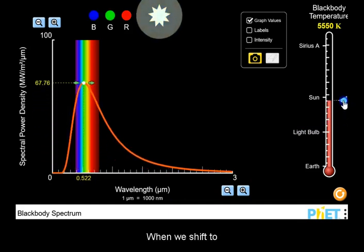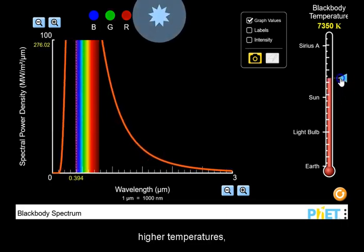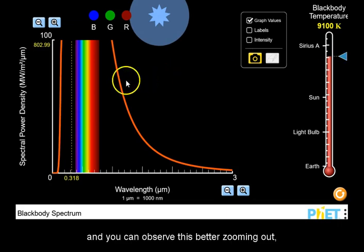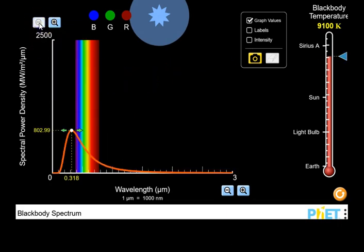When we shift to higher temperatures, and you can observe this better zooming out, the wavelength of maximum emission will shift to shorter wavelengths.